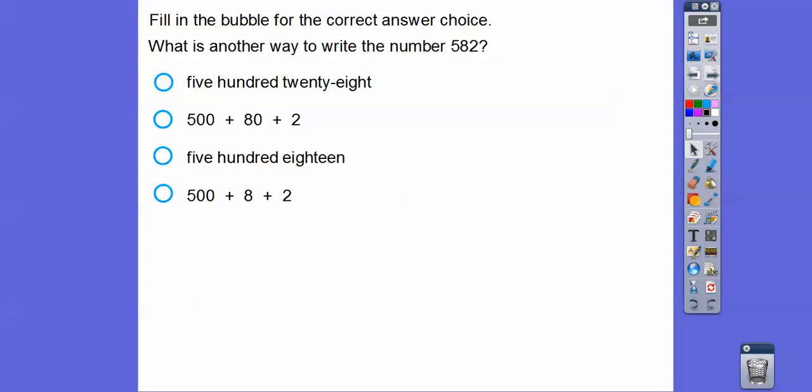What is another way to write the number 582? This is 582. 500, eight tens, two ones. So 500, here's 500 plus eight tens is 80 plus two ones. This one right here, 528 would be 528. It's not that one. They got it mixed up. 580 would be 580. This would be 510. It's this one. So it's 500 plus 80 plus 2.